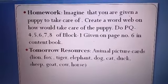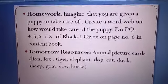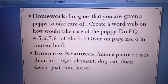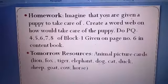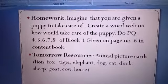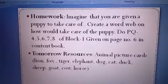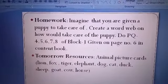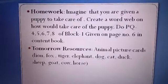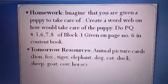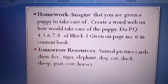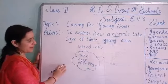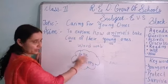Now student, this is your homework: imagine that you are given a puppy to take care of. Create a word map on how to take care of the puppy. Also do questions 4, 5, 6, 7, 8 of block 1 on page number 6 in your content book. For tomorrow's resources, bring animal picture cards: lion, fox, tiger, elephant, dog, cat, sheep, goat, cow, horse.